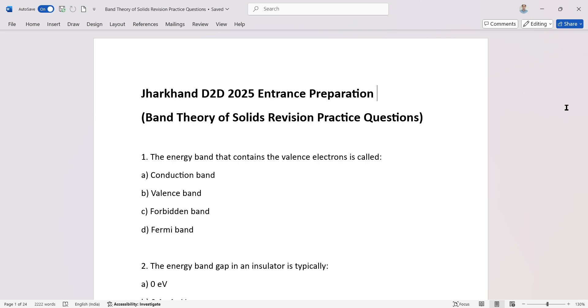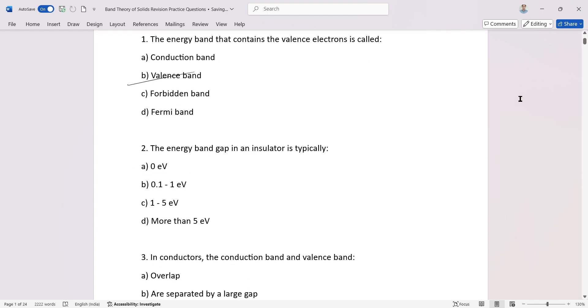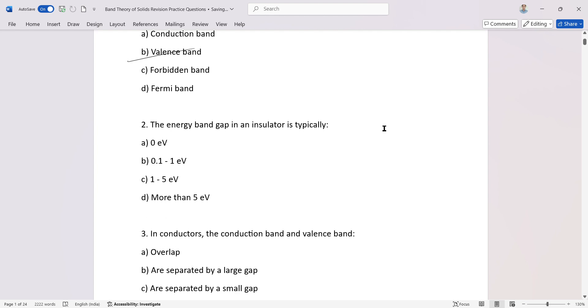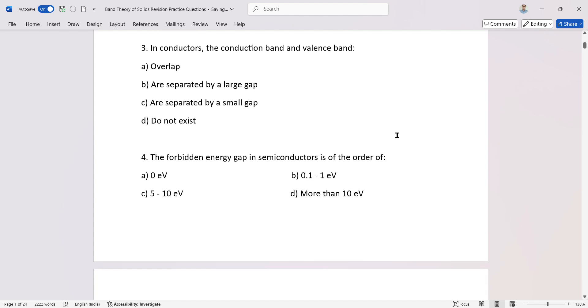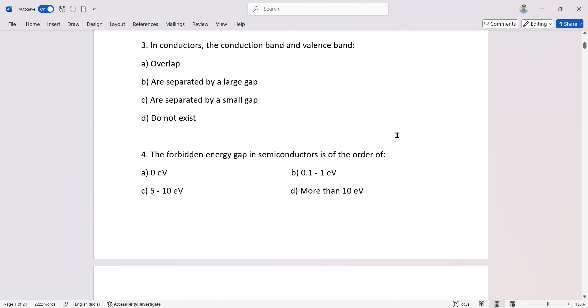Question number one: the energy band that contains the valence electron is the valence band. The energy band gap in an insulator is typically large. In conductors, the conduction band and valence band overlap.